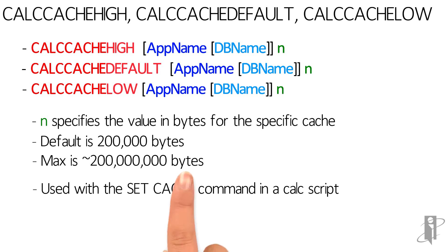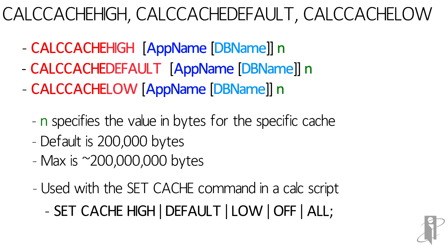The way you turn it on within a calc script is you say set cache space and either high, default, low, or off. High uses the high setting, default uses the default setting, low uses the low setting, and off doesn't use the cache at all. If you say set cache all, it's going to use the calc cache even if you're not calculating an entire sparse dimension.